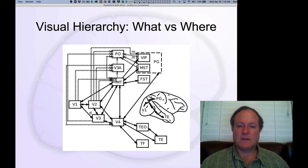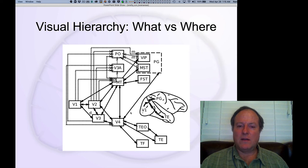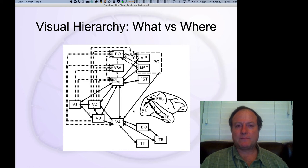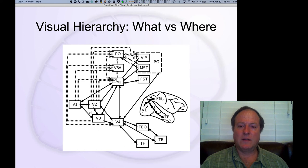This is illustrated in the case of the classic what versus where pathways, where information comes in at the back of the brain in area V1, then goes through a series of successive processing layers, finally resulting in the inferotemporal areas — TEO and TE — having object representations. The dorsal pathway, important for sensory-motor transformations going up into the parietal lobe, is somewhat less deeply hierarchically organized and has multiple different pathways.